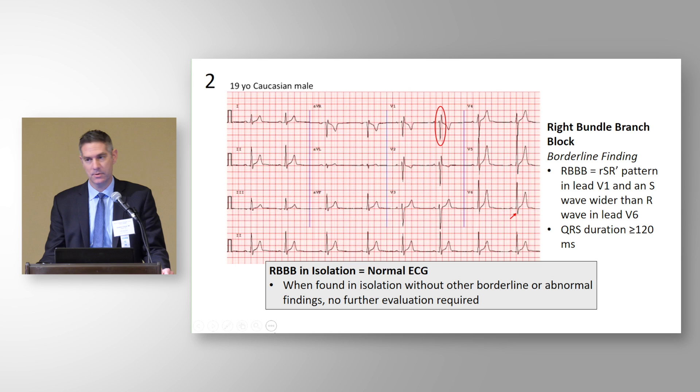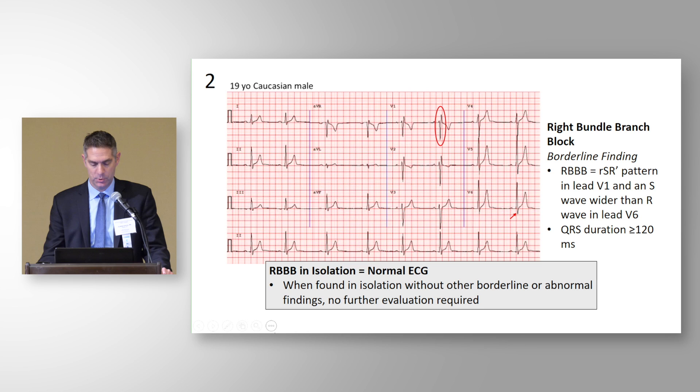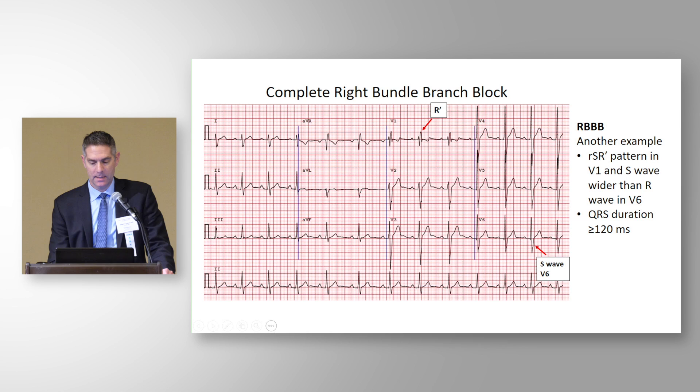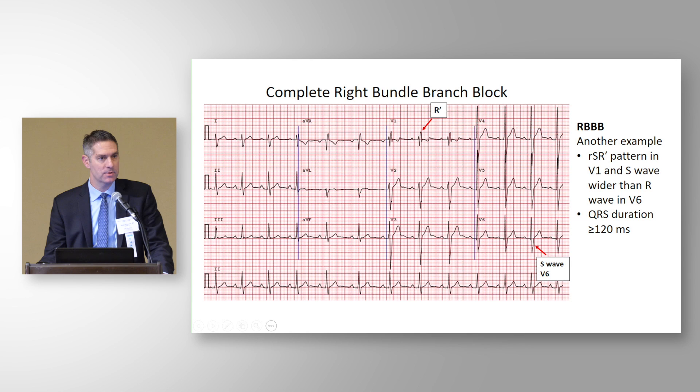Right bundle branch block in isolation with no other clinical markers of concern is considered a normal finding. In our international criteria, this is in the yellow box — single findings in isolation require no further evaluation, but two or more findings in combination would trigger additional investigation. Here's another classic example with a fairly prominent R prime in V1, a large S wave in V6 wider than the R wave, and QRS duration greater than 120 milliseconds.